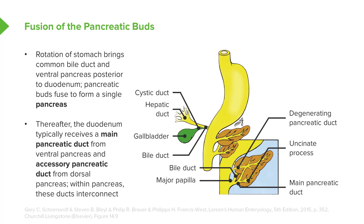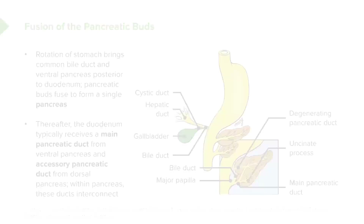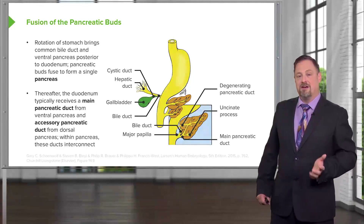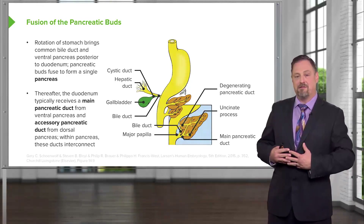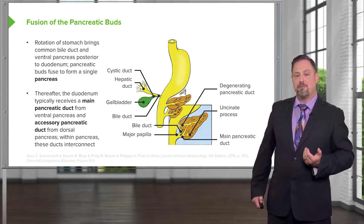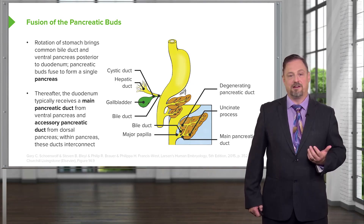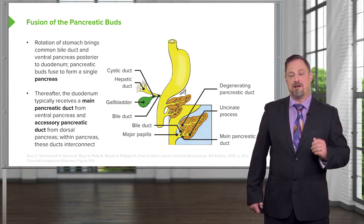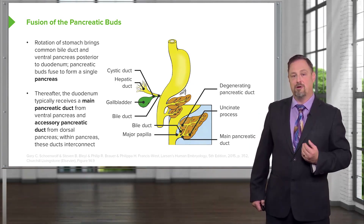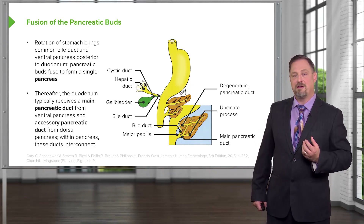Occasionally the accessory pancreatic duct will regress and the pancreas will have one and only one outlet for its secretory products into the duodenum. Because of this rotation and fusion, the ventral pancreatic bud creates the uncinate process and part of the pancreatic head, whereas the dorsal pancreatic bud forms the rest of the pancreatic head, its body, and its tail.